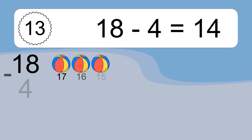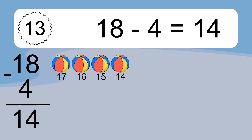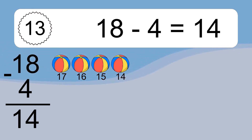18 minus 4 equals what? 18 minus 4 equals 14. Let's count it. 17, 16, 15, 14.